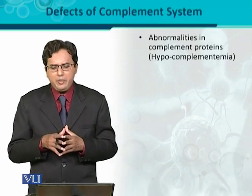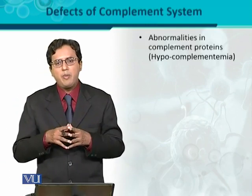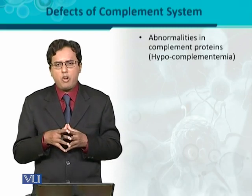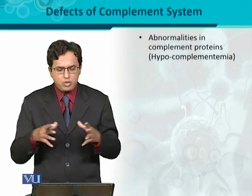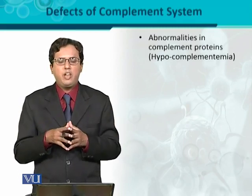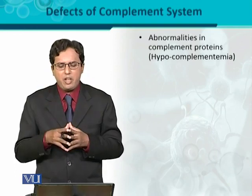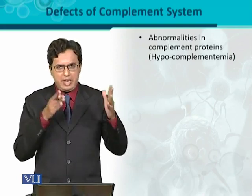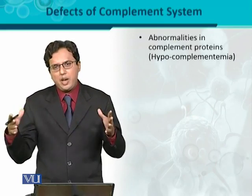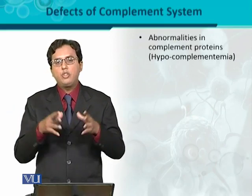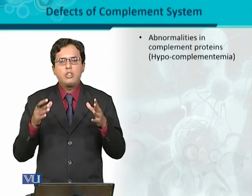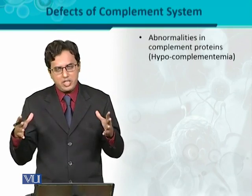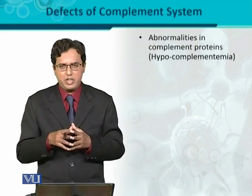In the complement system, a number of proteins are involved — these are called complement proteins. If there is an abnormality in their amount or number, it leads toward an immunodeficient state. For example, this condition is called hypocomplementemia — 'hypo' means less or decreased, 'complement' means complement protein, and 'emia' means inside the blood. So when the level of complement proteins in the blood decreases, their deficiency causes an immunodeficient state. Because the innate immune system is involved, this is very critical.